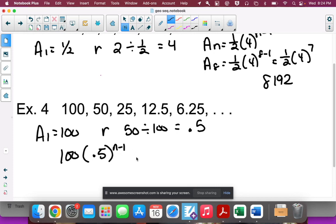We want the 8th term, so that's 100 times 0.5 to the (8-1), which is 100 times 0.5 to the 7th power. Let's put that in the calculator.